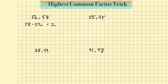Now you're going to take this number that we just found and see if it divides into each one of these numbers. Yes, 2 divides into 56, and yes, 2 divides into 58. So we're going to say that 2 is our greatest common factor.